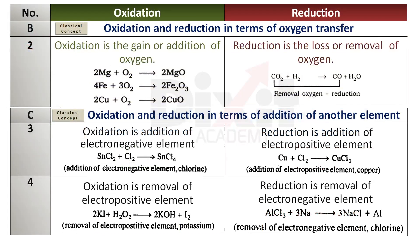Point number 2: According to the classical concept, in terms of oxygen transfer — oxidation is the gain or addition of oxygen. Example: metals like magnesium, iron, and copper combine readily with oxygen to form corresponding oxides. Reduction is the loss or removal of oxygen. Example: catalytic reduction of carbon dioxide by hydrogen for synthesis of carbon monoxide. In this reaction, oxygen is removed from carbon dioxide. Hence, it is reduction with respect to carbon dioxide.